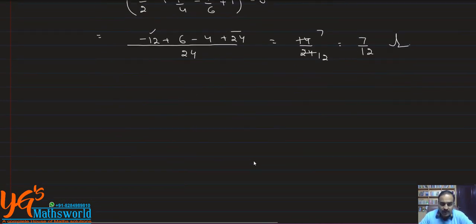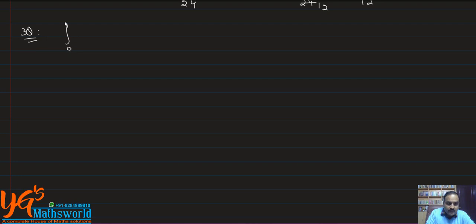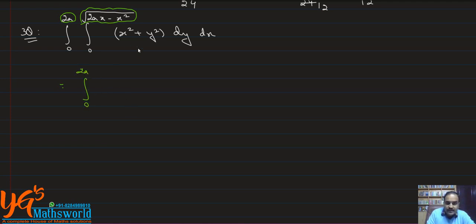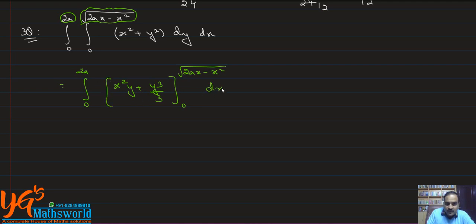One more question of the substitution category. Question number 3: evaluate the double integral from 0 to 2a, and from 0 to √(2ax − x²), of (x² + y²) dy dx. The limits of y are in terms of x and the limits of x are constant. Integrating with respect to y: we get x²y + y³/3, within limits 0 to √(2ax − x²), dx.